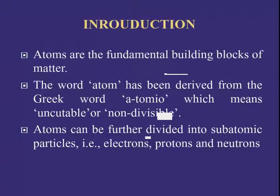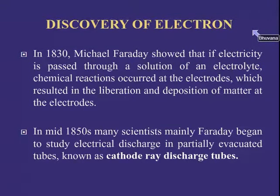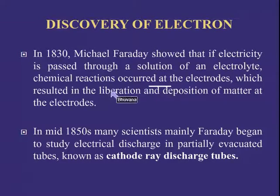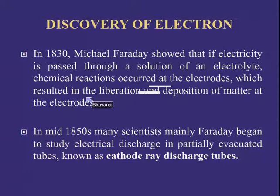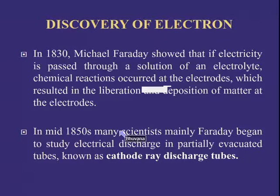Now I am going to explain the discovery of the electron. In 1830, Michael Faraday showed that if electricity is passed through a solution of an electrolyte, chemical reactions occurred at the electrodes — that is, at the anode and cathode. This is based on the principle that like charges repel each other and unlike charges attract each other, which results in the liberation and deposition of matter at the electrodes.